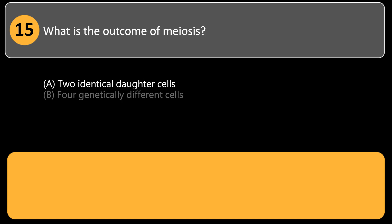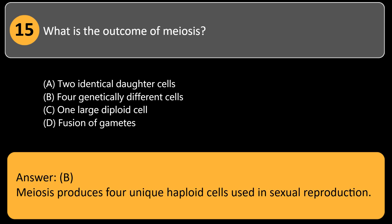What is the outcome of meiosis? A. Two identical daughter cells, B. Four genetically different cells, C. One large diploid cell, D. Fusion of gametes. Answer: B. Meiosis produces four unique haploid cells used in sexual reproduction.